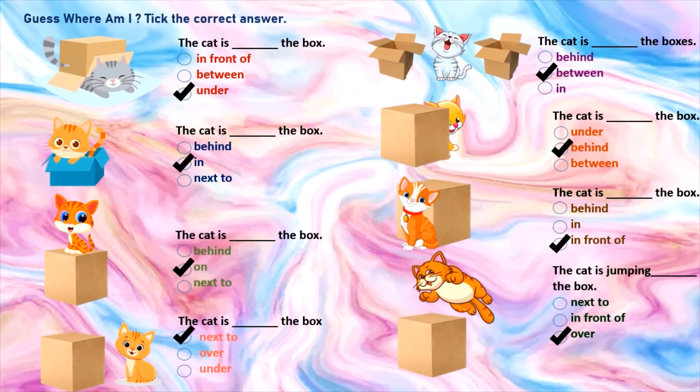Here are your answers where you had to guess the position of the cat and pick the correct answer. The first one: the cat is under the box. The cat is in the box. The cat is on the box. The cat is next to the box. The cat is in between the boxes. The cat is behind the box. The cat is in front of the box. The cat is jumping over the box.